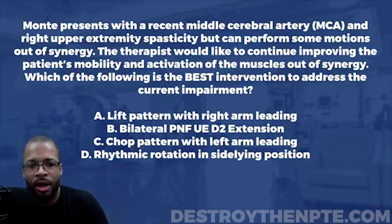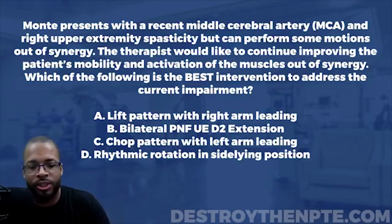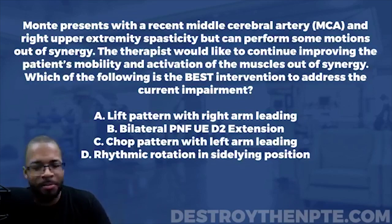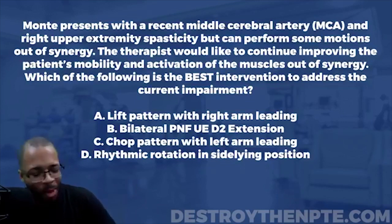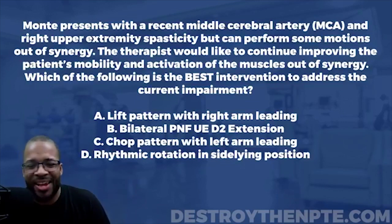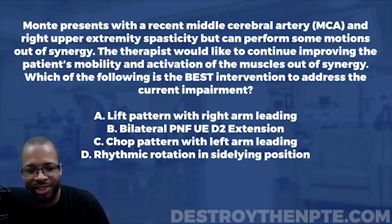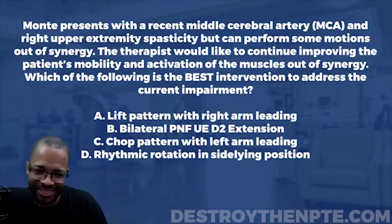The answer choices are: A — lift pattern with right arm leading; B — bilateral proprioceptive neuromuscular facilitation (PNF) upper extremity D2 extension; C — chop pattern with left arm leading; and D — rhythmic rotation in sideline position.